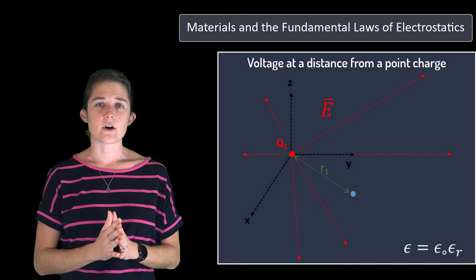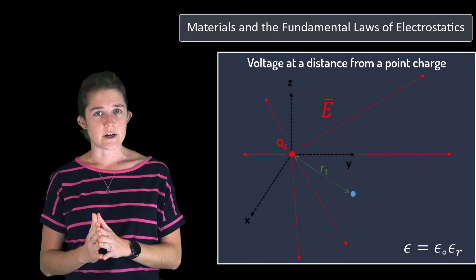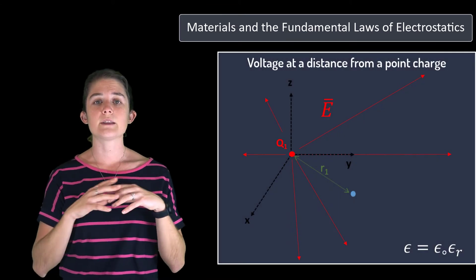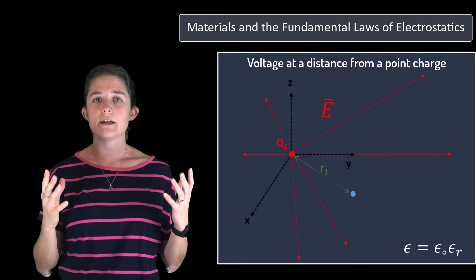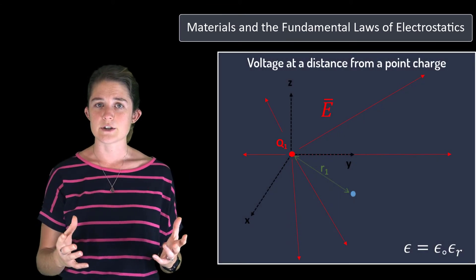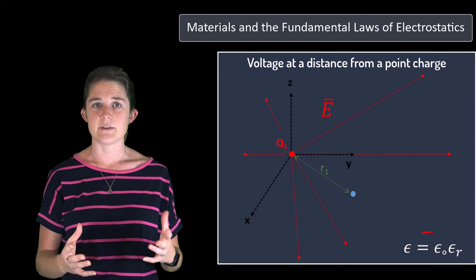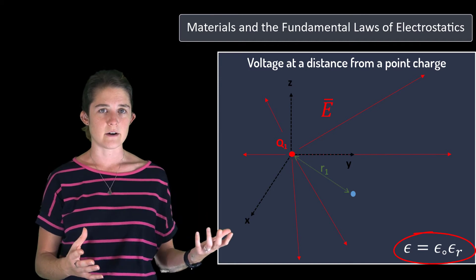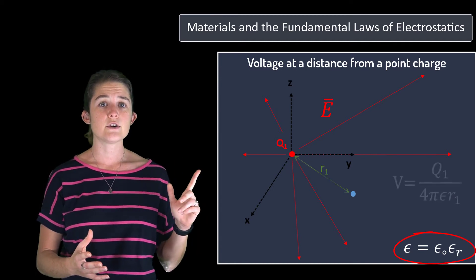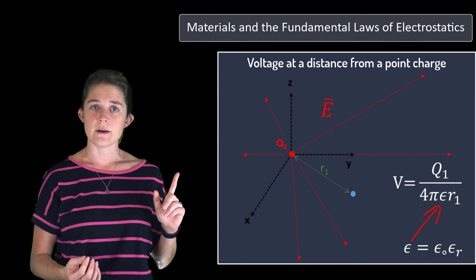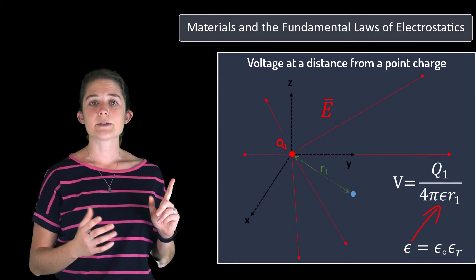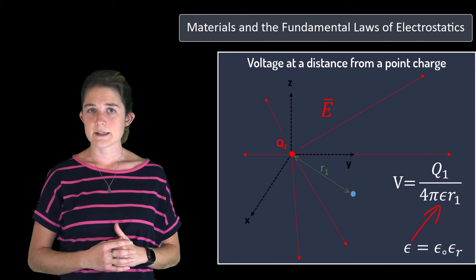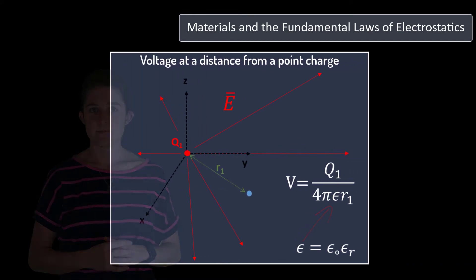Similarly, the voltage at a distance r1 from a point charge, assuming that the entire medium surrounding the point charge has a permittivity of epsilon_r, is q over 4 pi epsilon r1, where epsilon has replaced epsilon-naught in this equation.